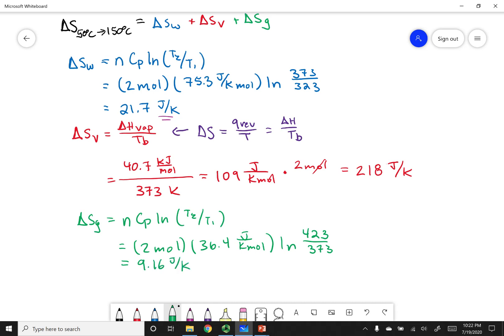Now what I can do is I can add all these values up, just like I stated at the start of this problem. So the whole process from going to 50 degrees all the way to 150 degrees is going to be 21.7 plus 218 plus 9.16. And if I calculate this out, this becomes 249 joules per Kelvin. Well, I hope that made sense. And remember to stay safe, Chem 1B.